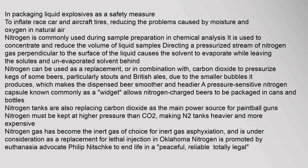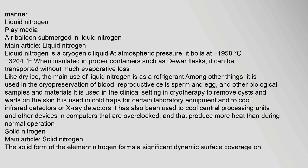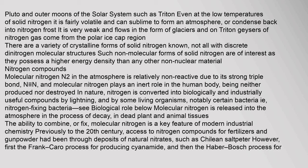Liquid nitrogen is a cryogenic liquid; at atmospheric pressure it boils at minus 195.8°C. On Pluto and outer moons of the solar system such as Triton, even at the low temperatures of solid nitrogen it is fairly volatile and can sublime to form an atmosphere or condense back into nitrogen frost. It flows in the form of glaciers, and on Triton, geysers of nitrogen gas come from the polar ice cap region. There are a variety of crystalline forms of solid nitrogen, not all with discrete dinitrogen molecular structures; such non-molecular forms of solid nitrogen possess a higher energy density than any other non-nuclear material.